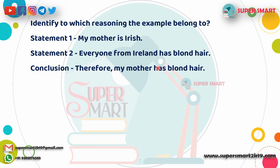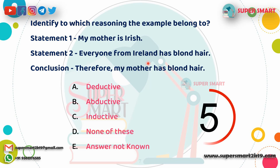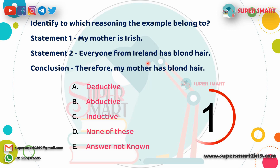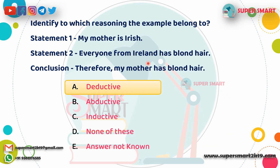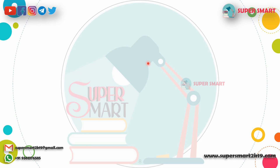Next, identify the type of reasoning from the following statements. Statement 1: My mother is Irish. Statement 2: Everyone from Ireland has blonde hair. Conclusion: Therefore, my mother has blonde hair. Answer: Deductive reasoning.